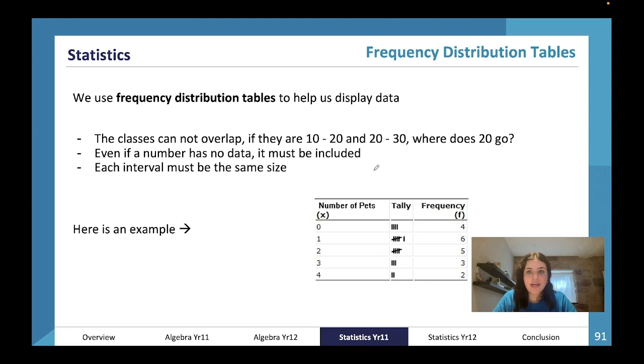Frequency distribution tables—we use these to help us display data. A few different rules: have a look at this table. Number one, classes cannot overlap. See how it doesn't say zero to one pet, one to two, two to three? Because where would somebody with four pets go? You can only have classes that do not overlap. For these classes you would say 10 to 19, 20 to 29, and so forth.